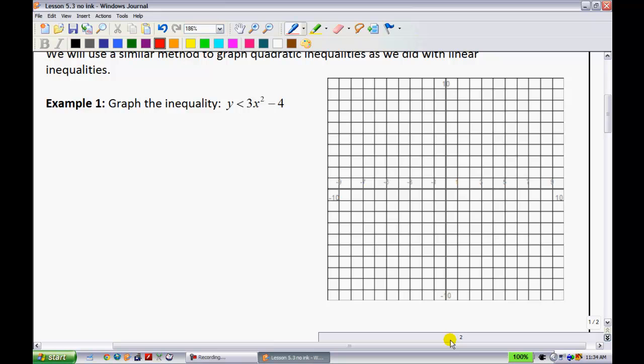It says graph the inequality y is less than 3x squared minus 4. We're going to graph the corresponding function, meaning I'm just going to graph y equals 3x squared minus 4 using what we learned in unit 4, where we used a step pattern. That was the one where if you remember for the graph y equals x squared, you go over 1, up 1, over 2, up 4, over 3, up 9, and so on. And then if there's a coefficient in front, you change it accordingly. For this one, what we see is that we have a vertex at 0, negative 4.